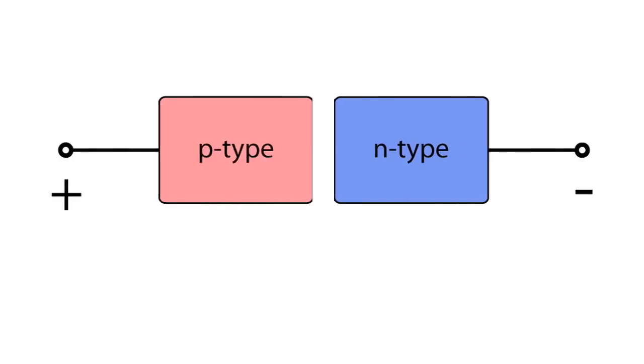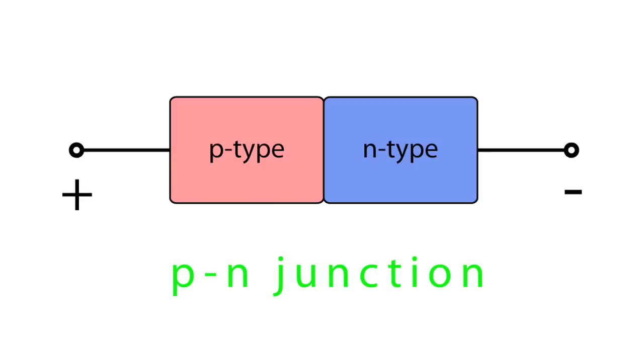When these two types are brought together, a P-N junction is formed, which will conduct electricity only in one direction. And there we have our P-N junction diode.